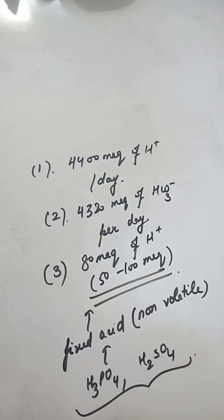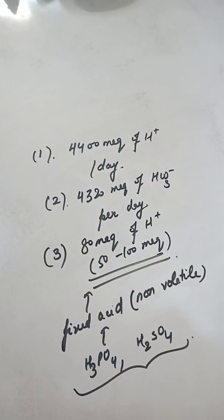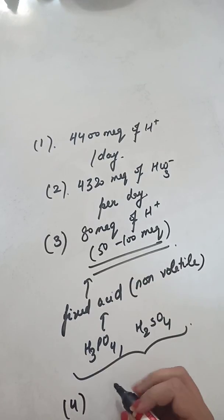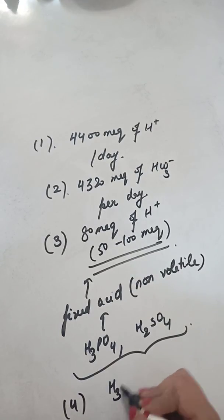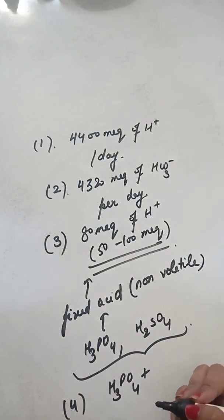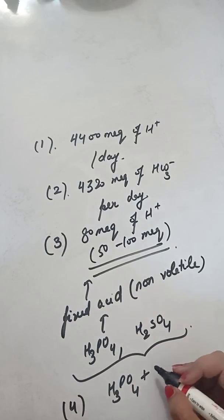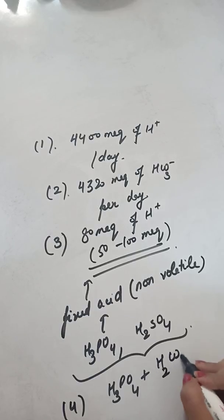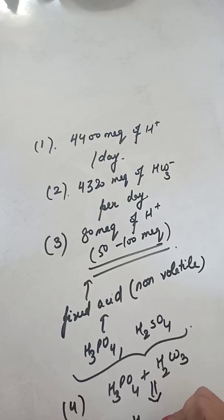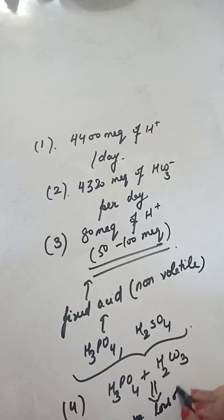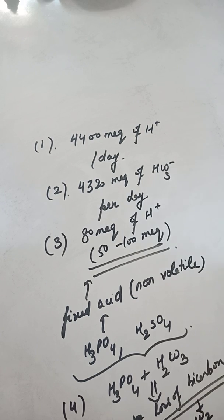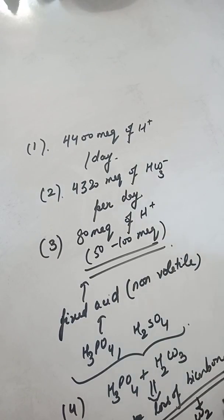These fixed acids also react with the interstitial buffer — the bicarbonate buffer present in the interstitial fluids — and result in loss of bicarbonate from the body in the form of carbon dioxide.